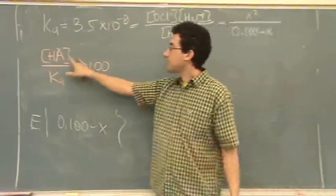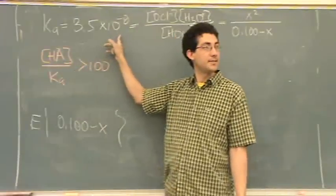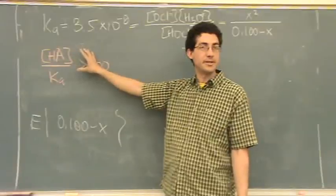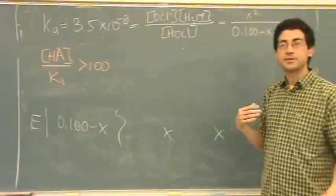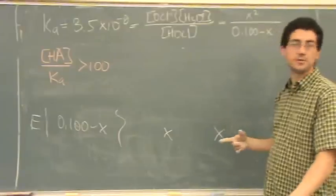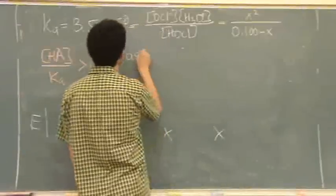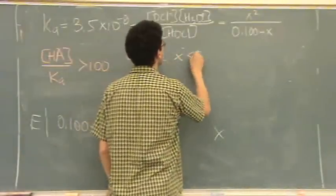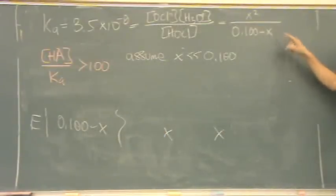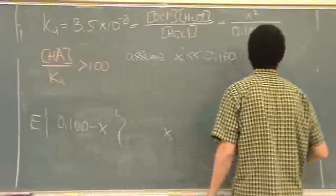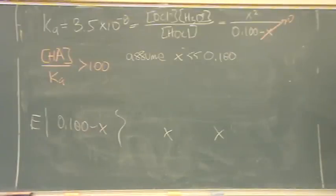So notice in our case, concentration of the HOCl is 0.1, divided by Ka, which is 10 to the minus eighth. This is a huge number, way bigger than 100. So the following little trick is going to prevent you from using your quadratic formula. It's going to be rare in this chapter, in chapter 17, to use your quadratic formula anymore. What you're going to do is you're going to assume that X is a lot smaller than the concentration of the acid.